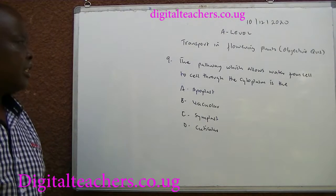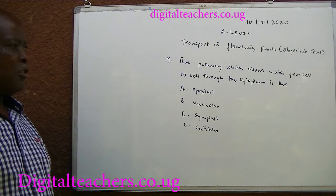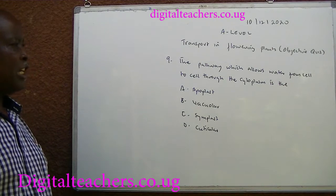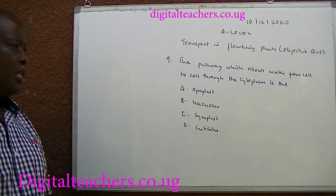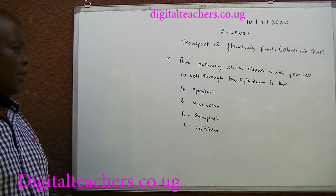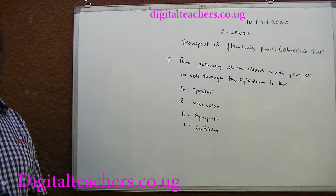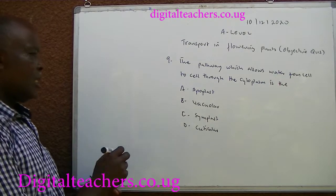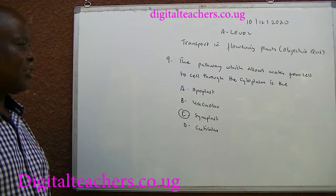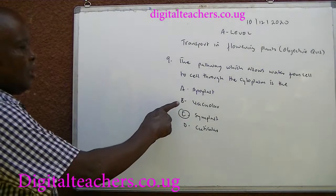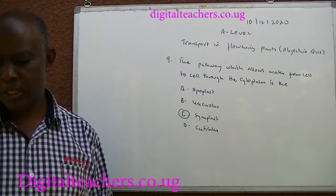Number 9. The pathway which allows water from cell to cell through the cytoplasm is A. Apoplast. B. Vacuolar. C. Symplast. D. Tubular. You can pause and answer. The answer is C. In the apoplast, water passes through the cellulose membrane. In the vacuolar pathway, water passes through the vacuoles. Number 10.